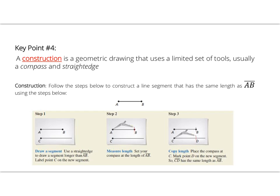Key point number four: A construction is a geometric drawing that uses a limited set of tools, usually a compass and straight edge. If you do not currently have these tools ready to be used, pause the video here and go grab them. Once you have your tools, follow the steps below to construct a line segment that has the same length as segment AB. It says use a straight edge to draw a segment longer than segment AB. So if you're following the instructions, this is what your picture should look like. You're just drawing, using your straight edge, a segment that's clearly longer than the one that's given to you on your paper. Then label point C on the new segment. Now you continue the rest of your steps. Bring in clarifying questions tomorrow.